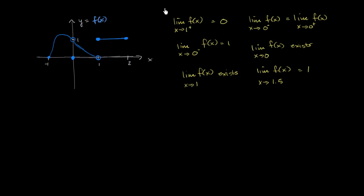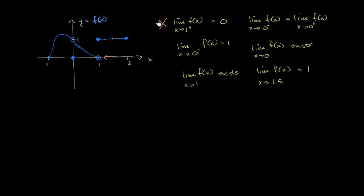The first statement: the limit of f of x as x approaches 1 from the positive direction is equal to 0. As x approaches 1 from the positive direction — values greater than 1 — f of x stays right at 1. So the limit from the positive direction is 1, not 0. This statement is not true.